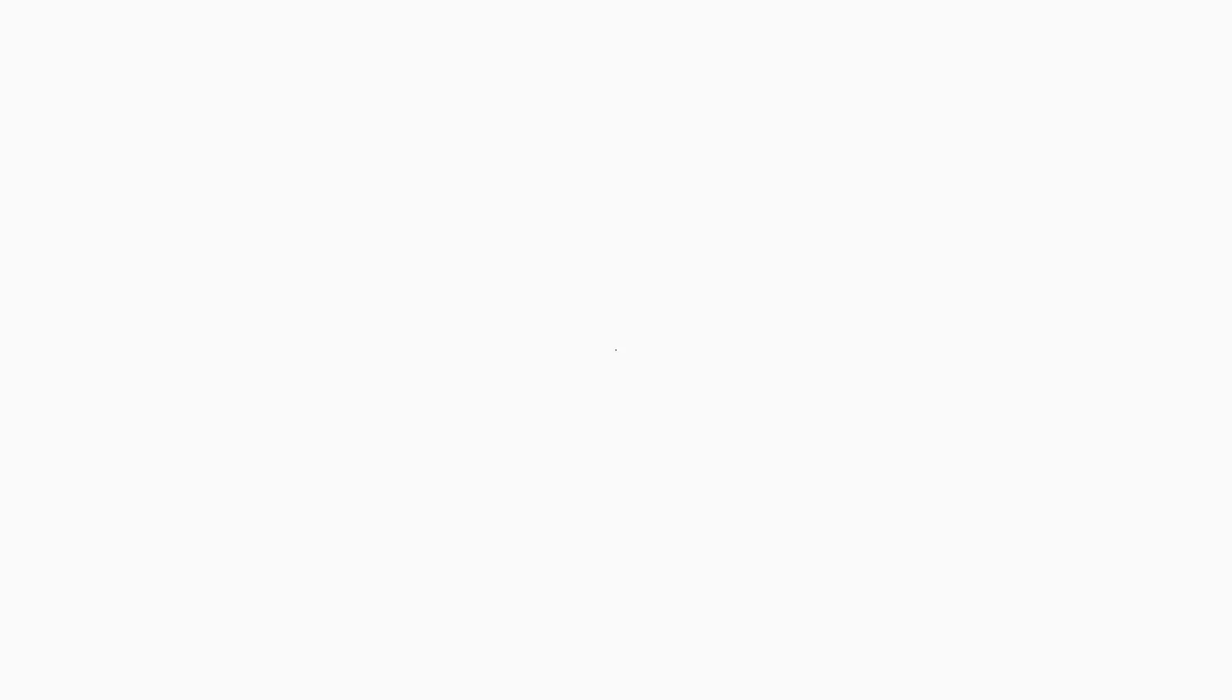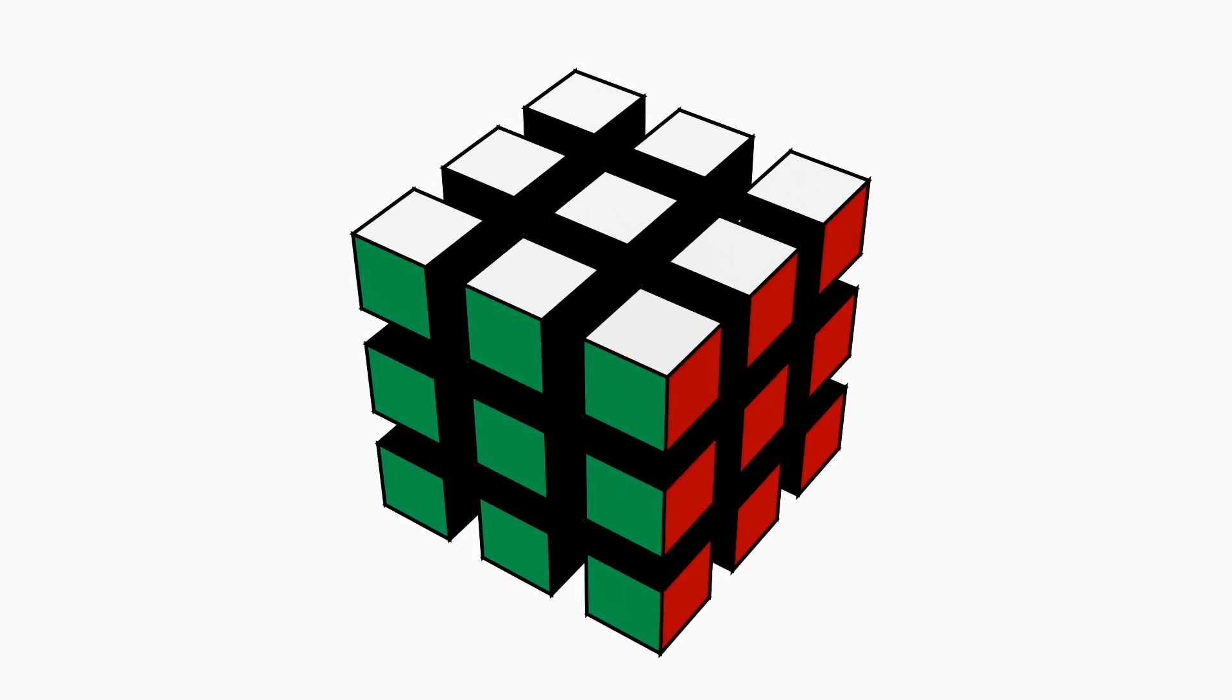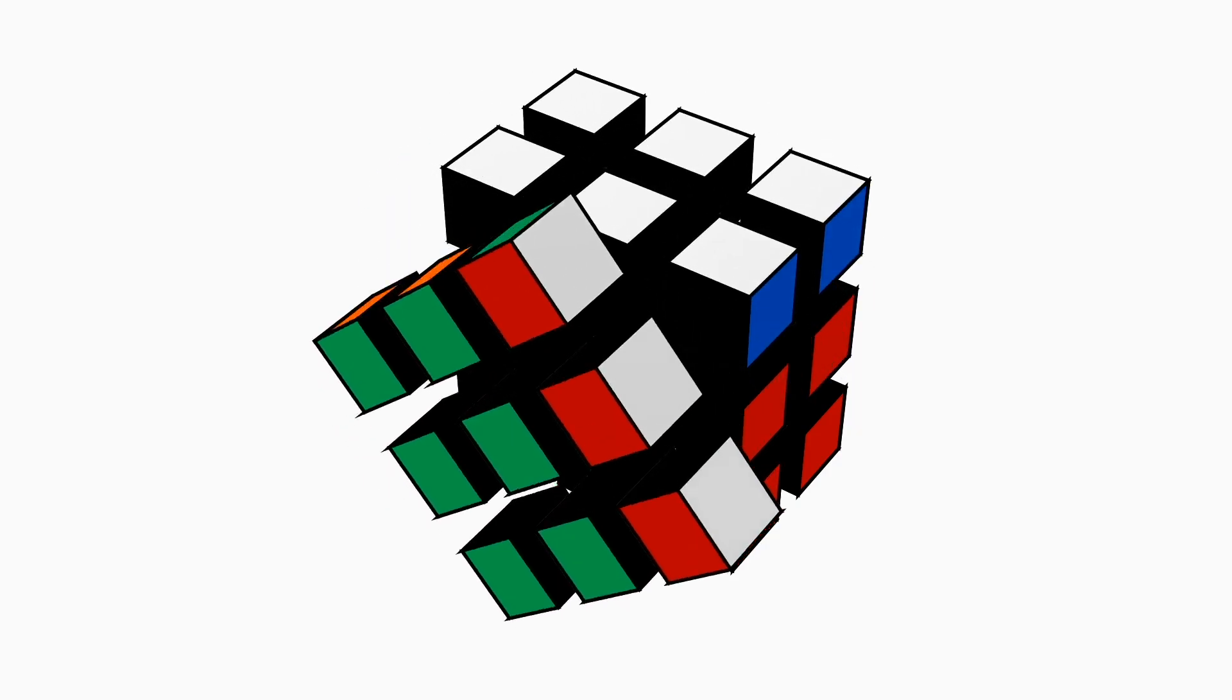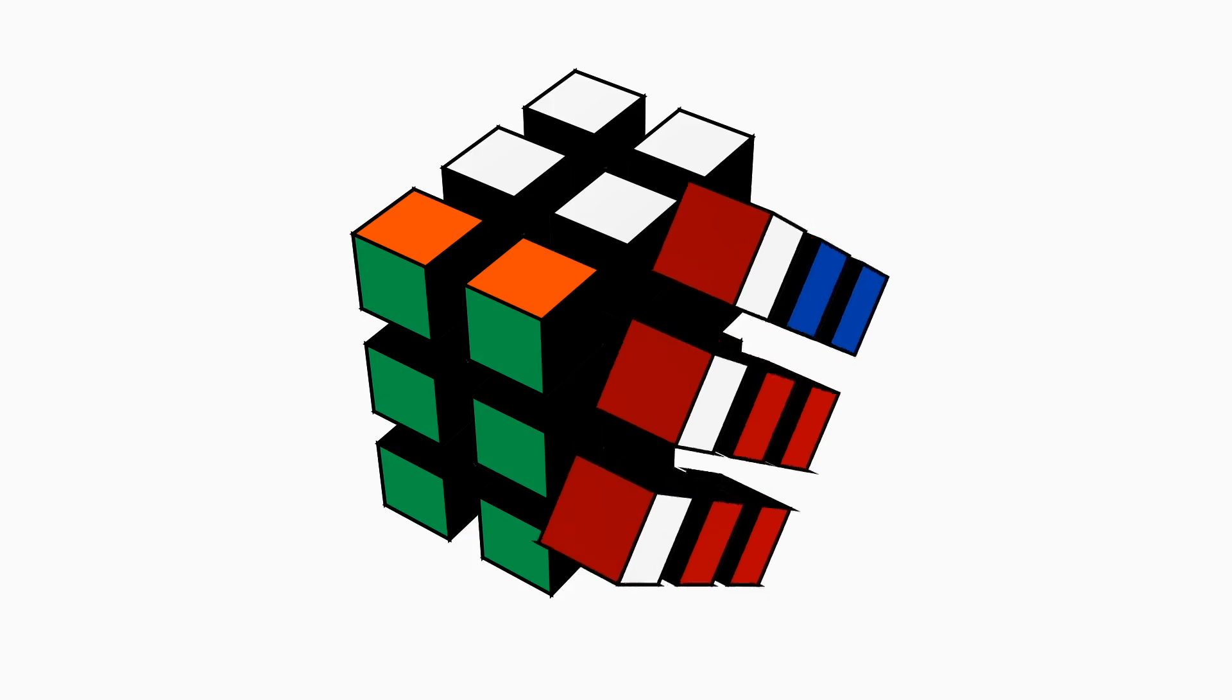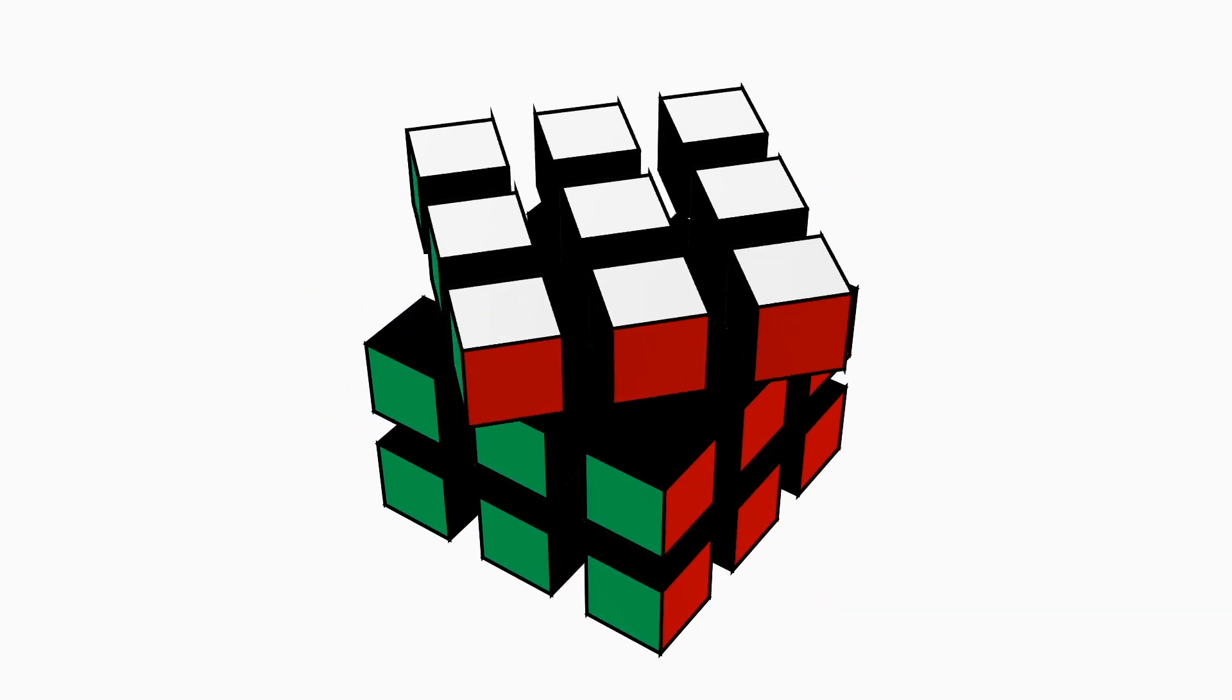The standard 3x3x3 Rubik's Cube has three kinds of pieces: corner pieces, which have three stickers; edge pieces, which have two stickers; and center pieces, which have one sticker. One thing that you might notice is that turning any of the six faces of the cube doesn't move the locations of any of the center pieces.